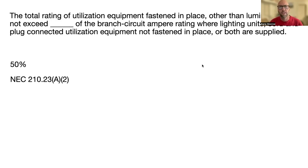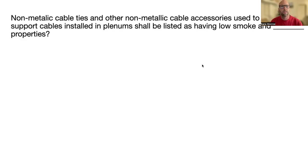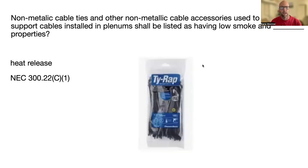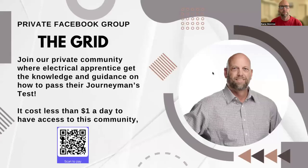Non-metallic cable ties and other non-metallic cable accessories used to secure and support cables installed in plenum shall be listed as having low smoke and low heat release properties. That's NEC 300.22(C)(1). This is referring to your basic tie wraps — that's all.